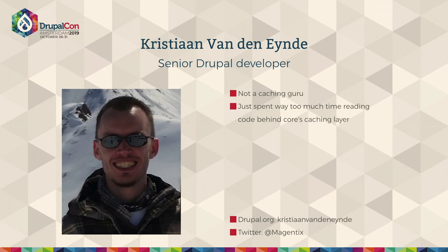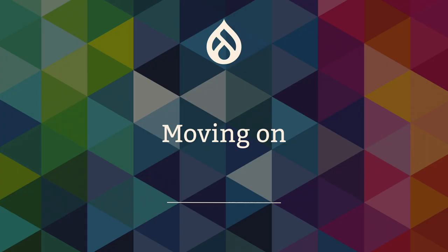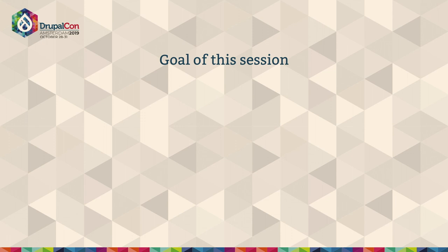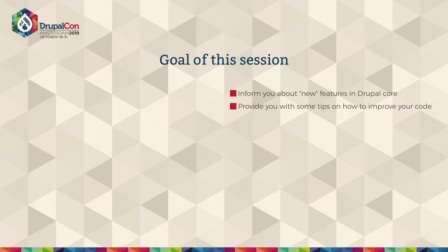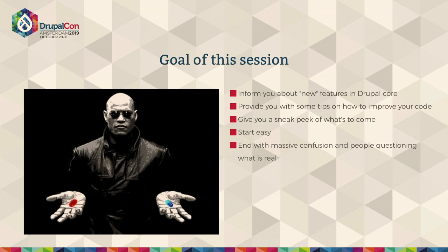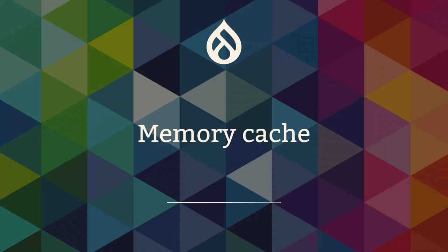Before we get started, I'm actually not a caching guru. I just spent a lot of time reading the core caching layer. So don't get your hopes up if you have any questions regarding Varnish or something — that's not me. I just know the core side of things. The goal of this session is to inform you about new features in Drupal core — they may have been around for a couple months, but still relatively new compared to when Drupal 8 first came out. I'm going to provide tips on how to improve your code, give you a sneak peek of what's to come. We're going to start easy with some really simple tips, and then end with massive confusion and people questioning what is still real.